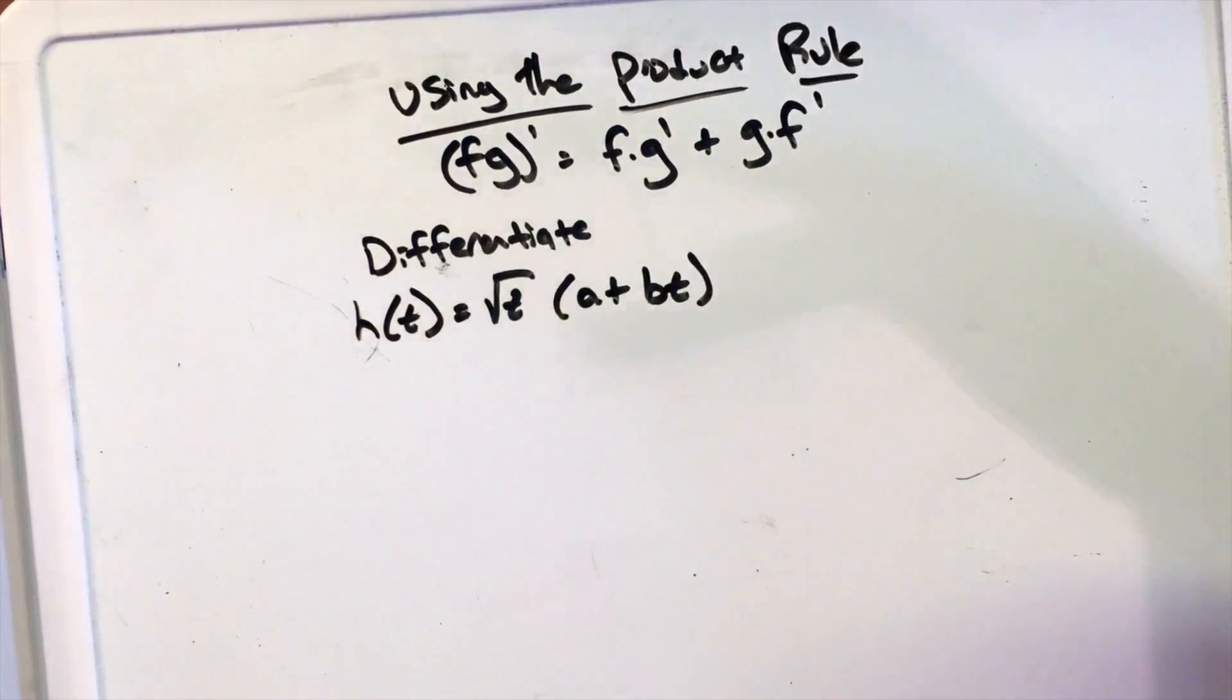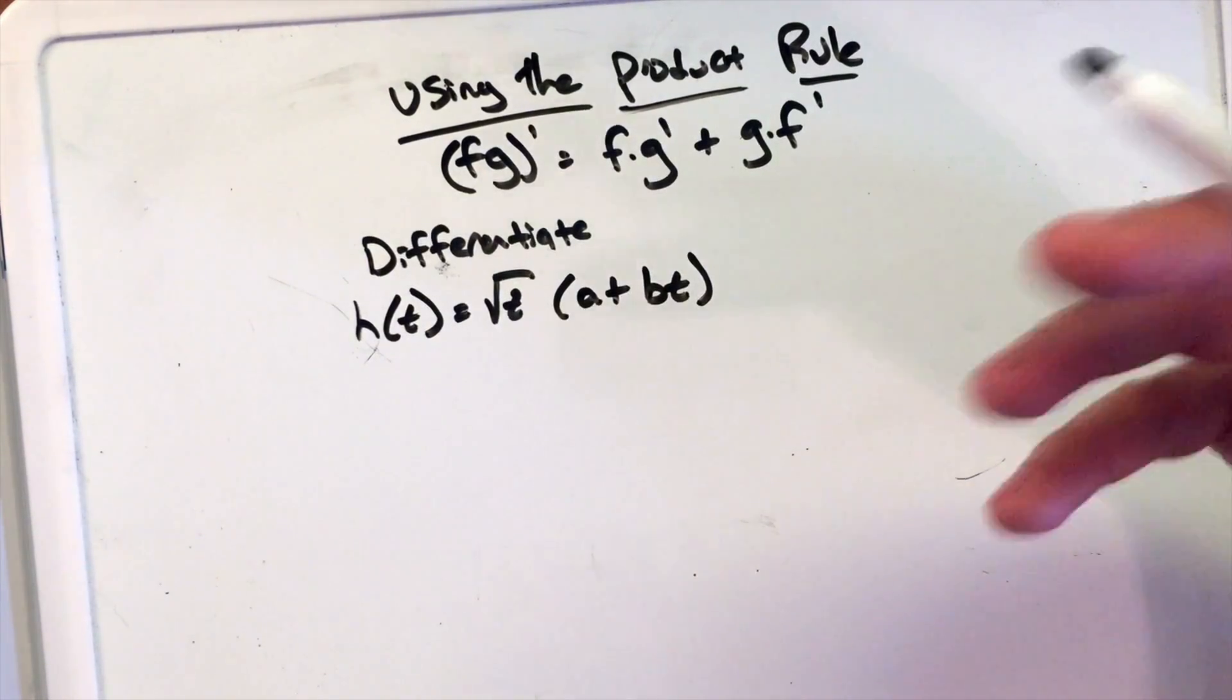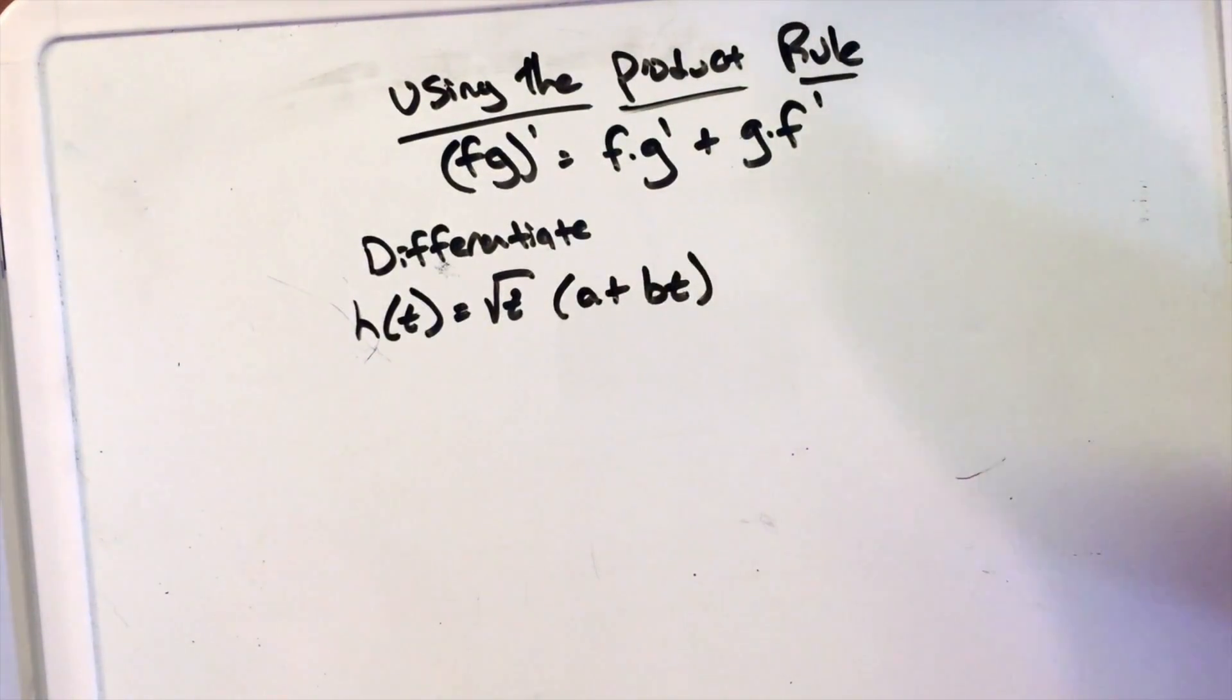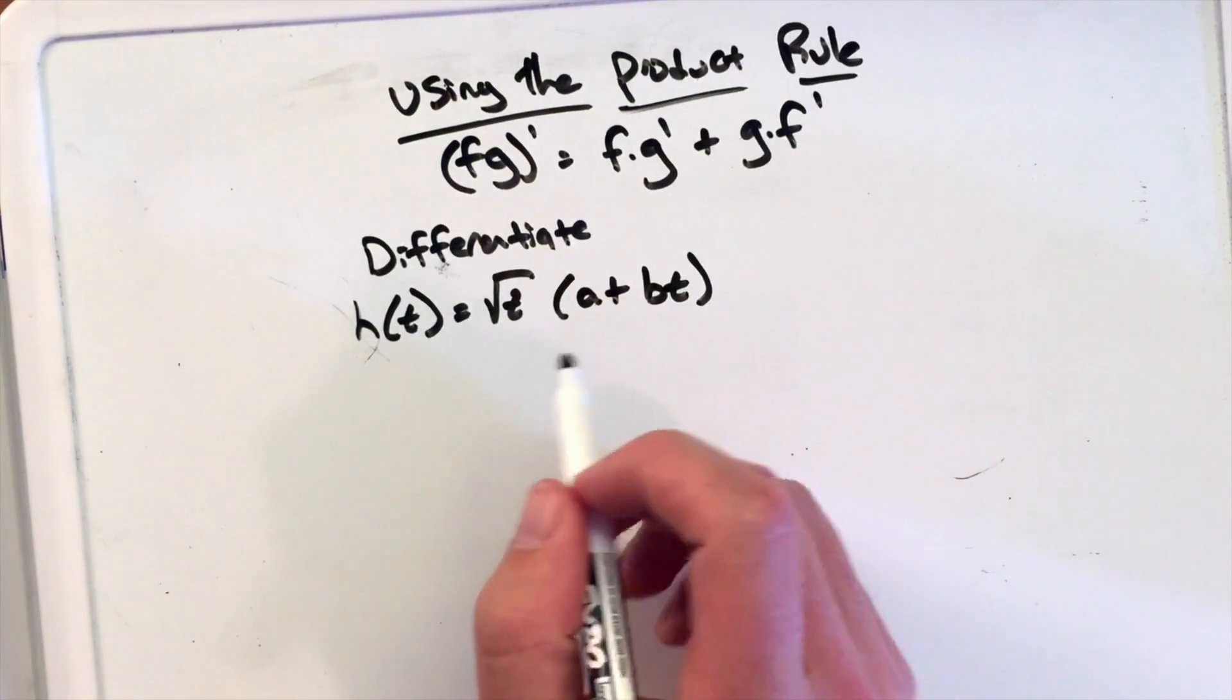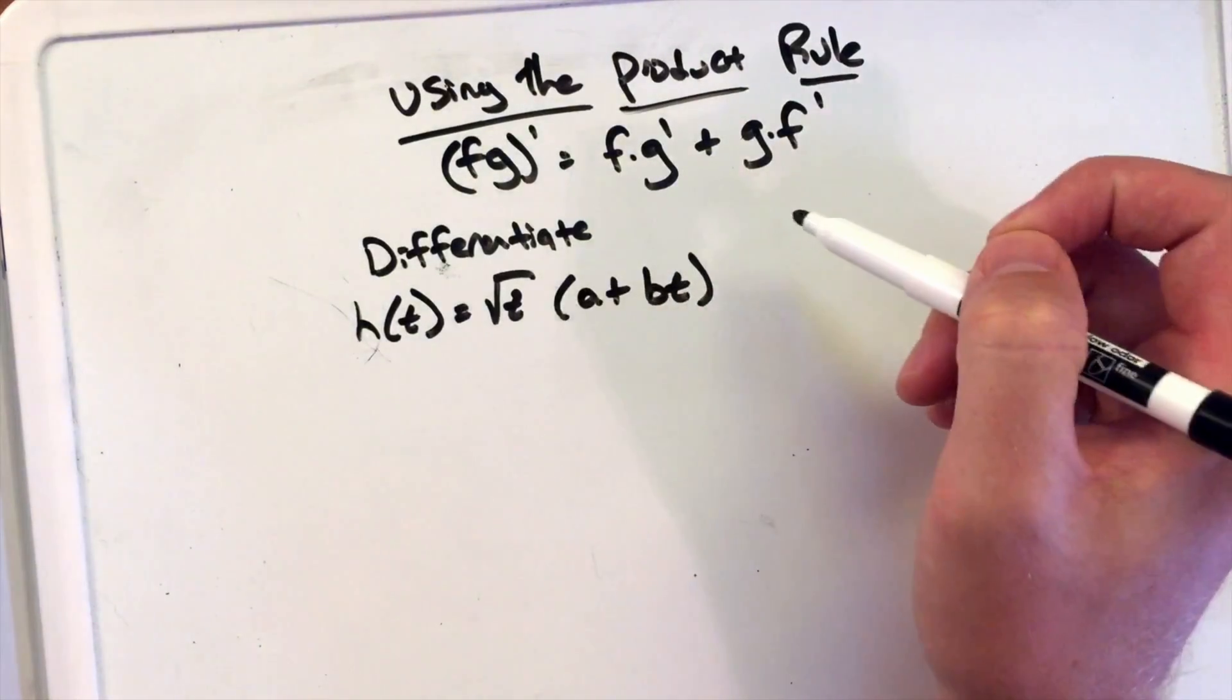Now a and b are constants, not our main variable here, but we don't know what those constants are. So when we want to differentiate this, again, we're going to use the product rule. We have two parts here.